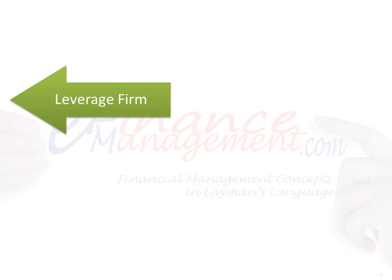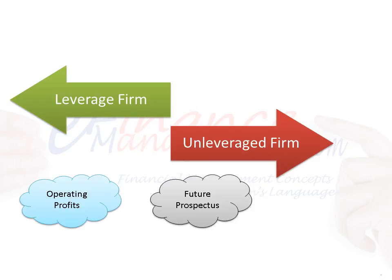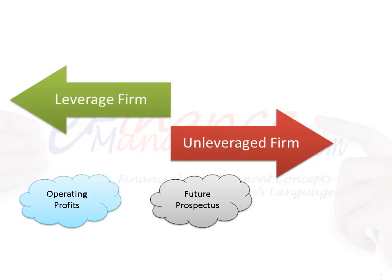The Modigliani and Miller Approach indicates that the value of a leveraged firm — a firm which has a mix of debt and equity — is the same as the value of an unleveraged firm — a firm which is wholly financed by equity — if the operating profits and future prospects are the same. That is, if an investor purchases shares of a leveraged firm, it would cost him the same as buying the shares of an unleveraged firm.